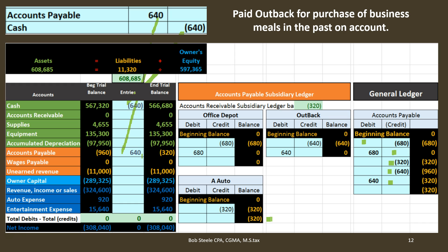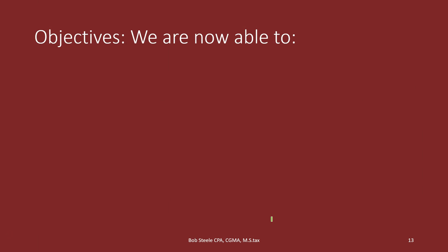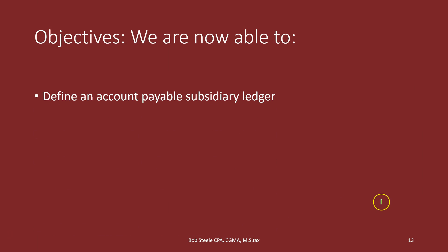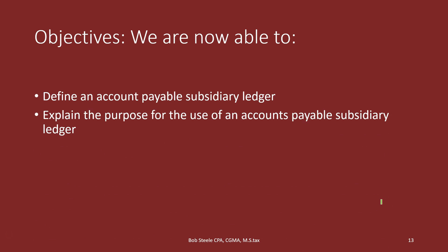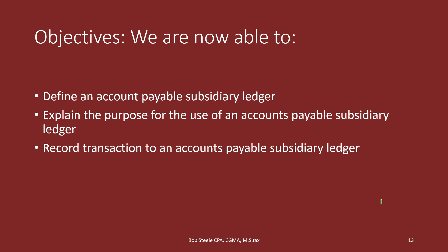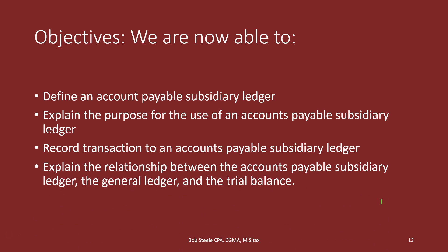And so we are now able to define accounts payable subsidiary ledger, explain the purpose for the use of accounts payable subsidiary ledger, record transactions to an accounts payable subsidiary ledger, and explain the relationship between the accounts payable subsidiary ledger, the general ledger, and the trial balance.